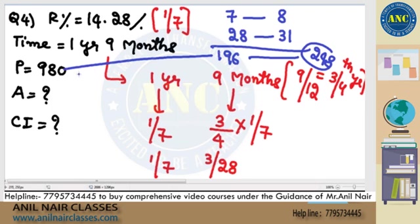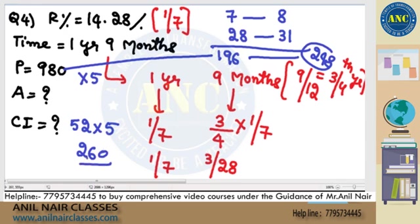196 corresponds to the principal of 980, so the multiplier is ×5. Therefore, CI is nothing but 52 × 5 = 260. The amount is nothing but 248 × 5. I hope the idea is clear.